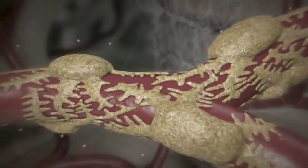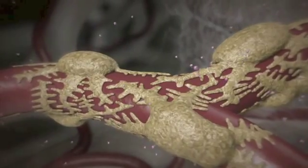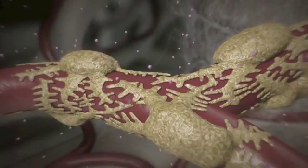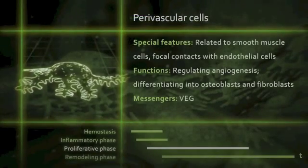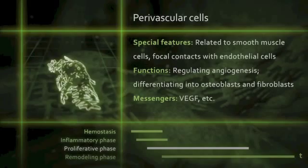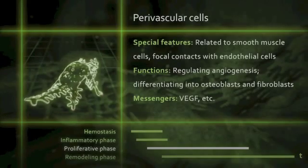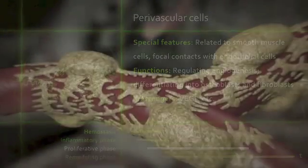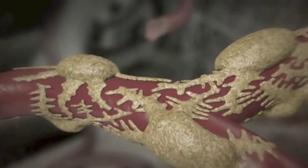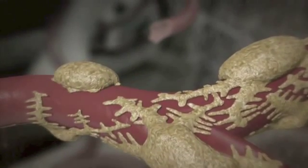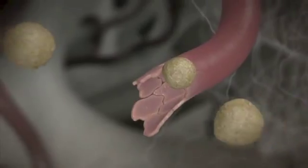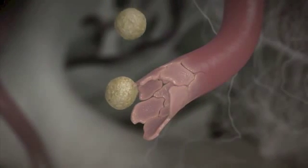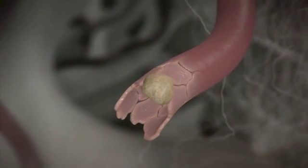Subsequently formed VEGF influences perivascular cells, which are mesenchymal stem cells found on blood vessels. They migrate along the VEGF gradient into areas of low partial oxygen pressure, where they form new blood vessels that finally integrate into the existing vascular network. Angiogenesis restores the oxygen supply and forms the foundation of bone healing.